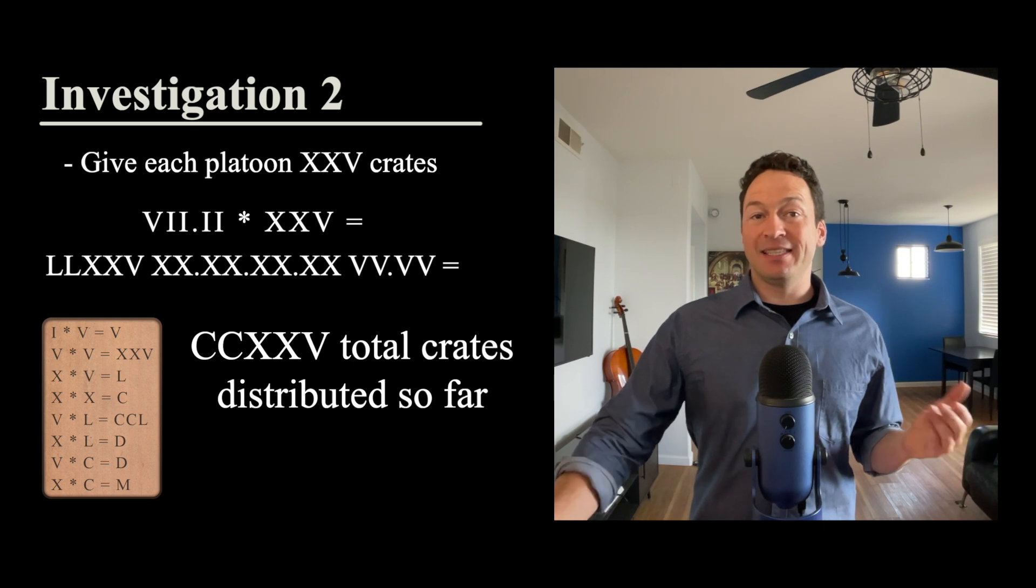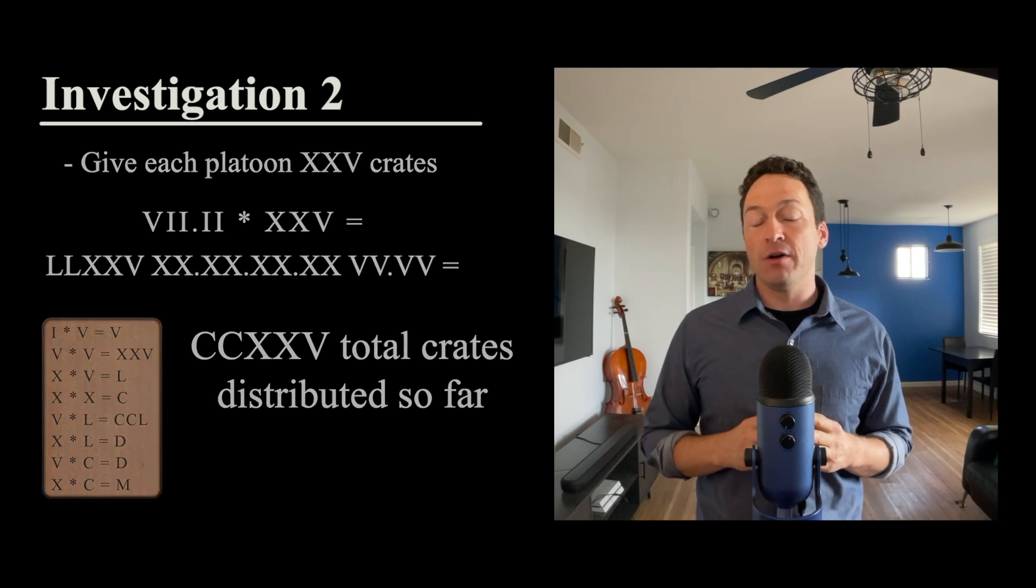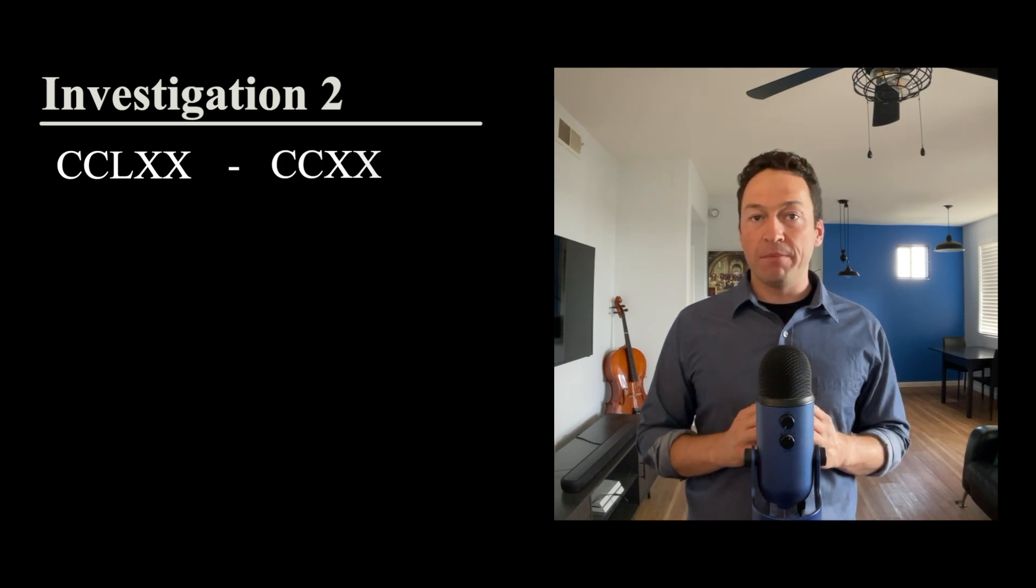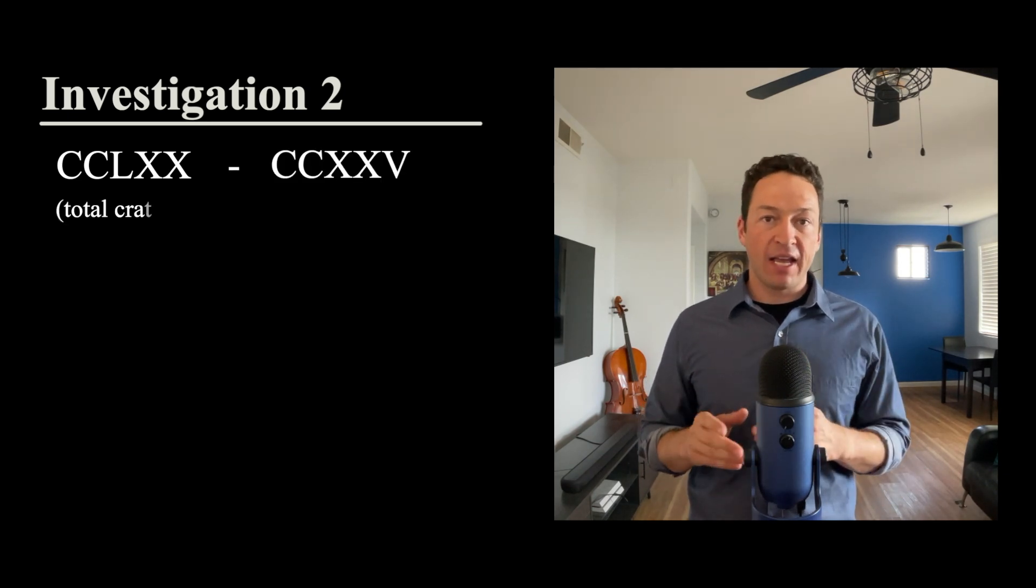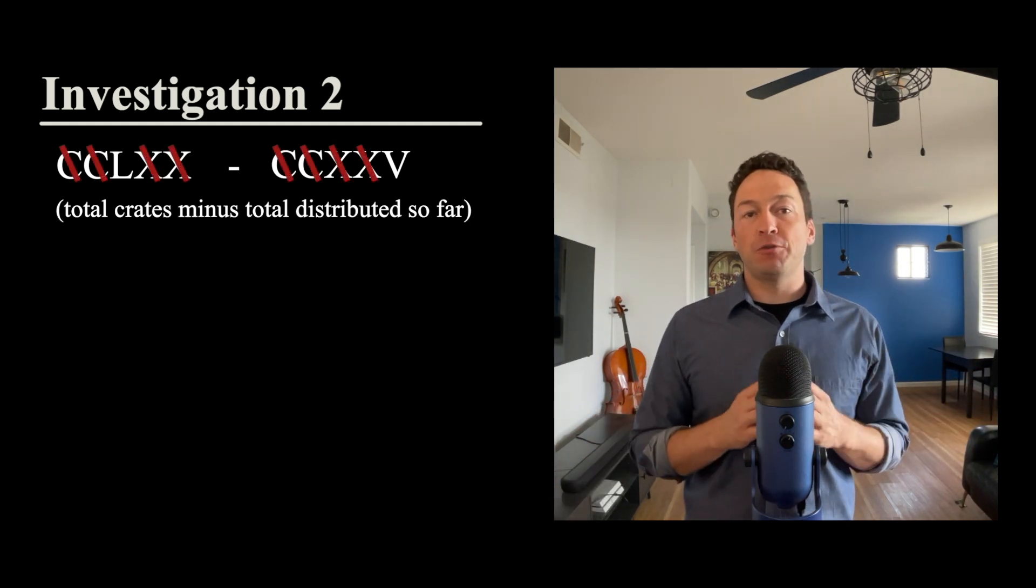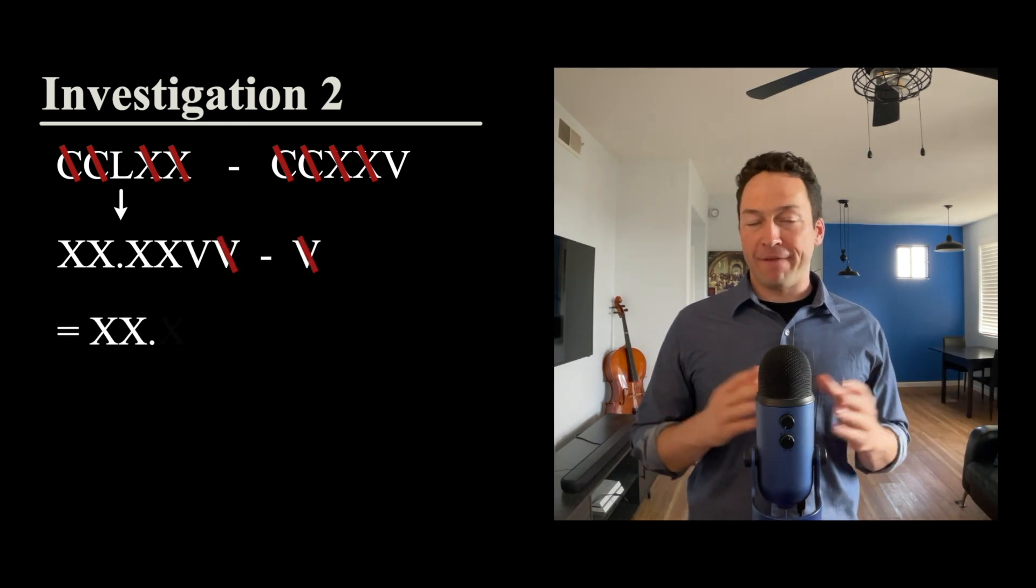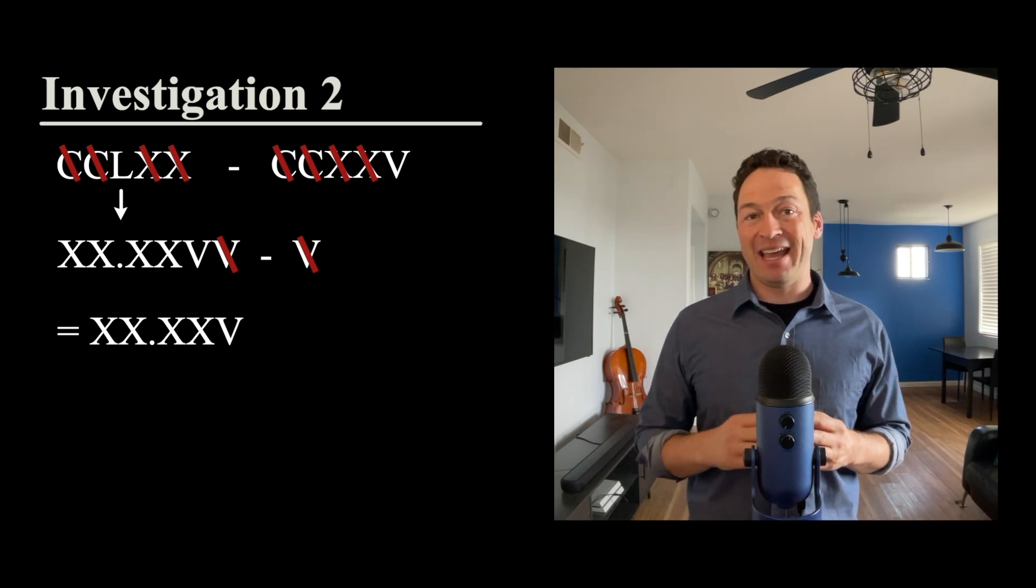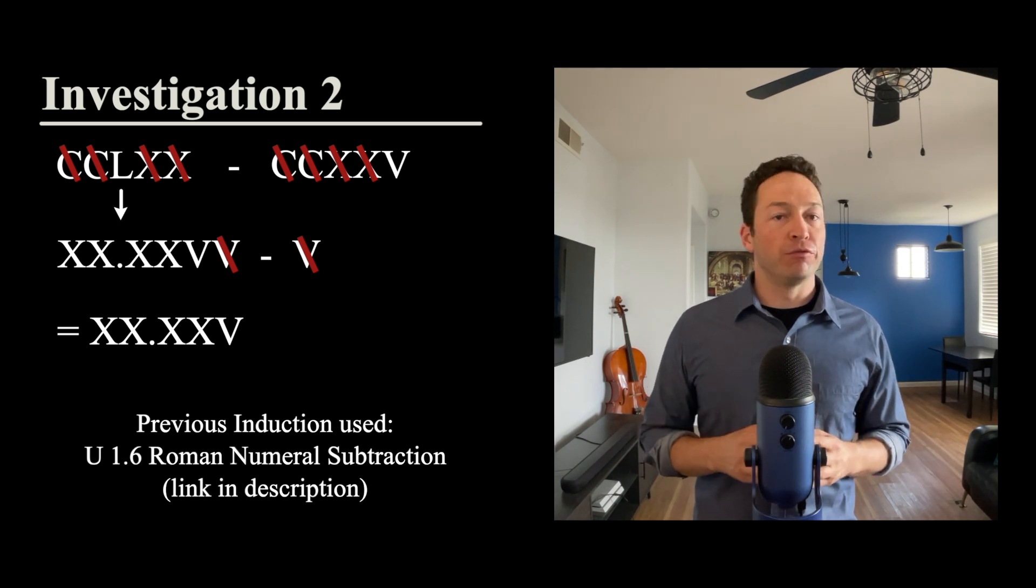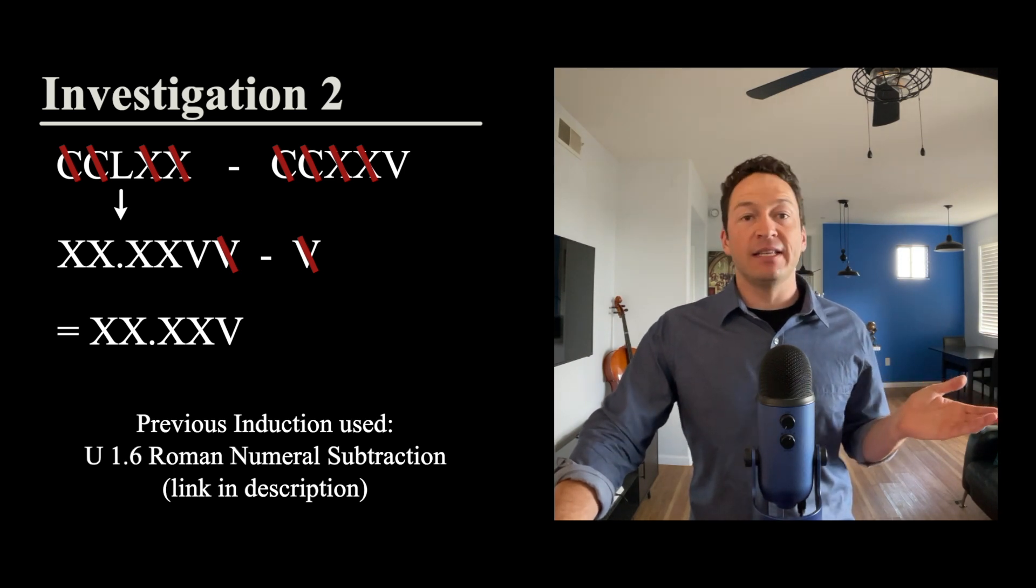What that means is that he can use subtraction to actually figure out how many crates he has left to distribute now. Remember he had 250 and 210 crates, and he has just distributed 200, 210, and five crates. So he's going to use subtraction. He crosses out, then he has to expand that L so that he can cross out further. That leads to four, 10 and five crates that he has left to distribute at the end. Just as a reminder, this uses Roman numeral subtraction, which is from a previous video. Now he has four, 10 and five crates left to distribute.